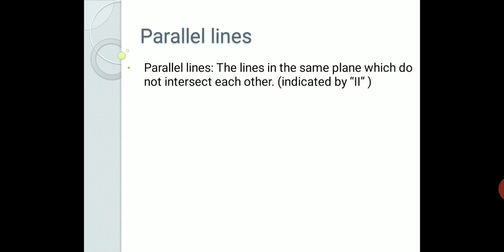We will start with the definition of parallel lines. The lines in the same plane which do not intersect each other. Parallel lines are those lines which are coplanar and even after producing them, they never intersect. Parallel lines are indicated by a symbol of two vertical lines. In our daily life, we observe and use various objects which have parallel lines in them.